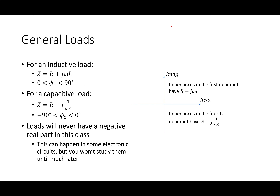How do I figure that out? From Ohm's law: V equals I times Z. So the angle of V equals the angle of I plus the angle of Z. That means the angle of the current equals the angle of the voltage minus the angle of the impedance. If the impedance has a positive angle, the current is behind the voltage — we call that lagging.